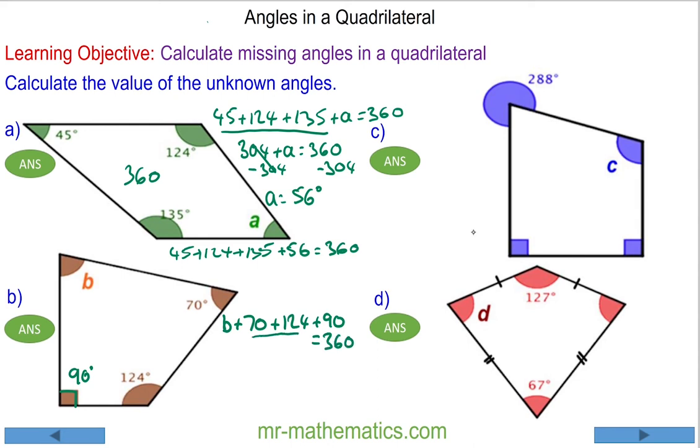These three angles have a total of 284, so B plus 284 will equal 360. Take away 284 from both sides. Angle B is 76 degrees.